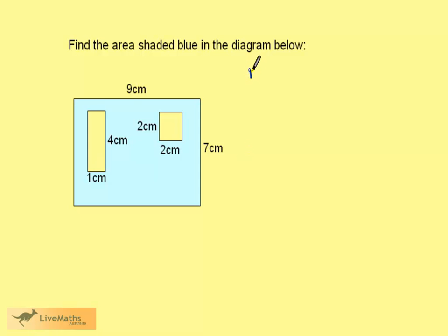If we say that Area 1 is the area of the large rectangle, this is 9 by 7. 9 times 7 is 63 centimeters squared.